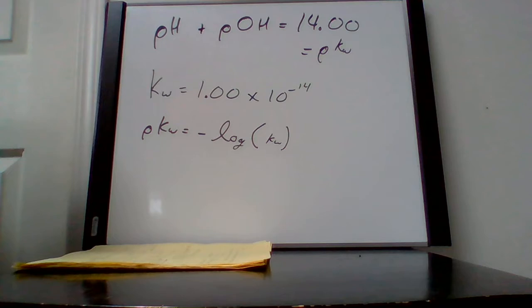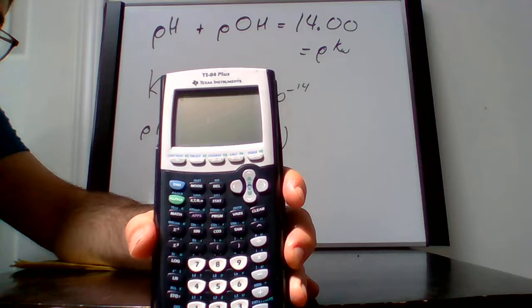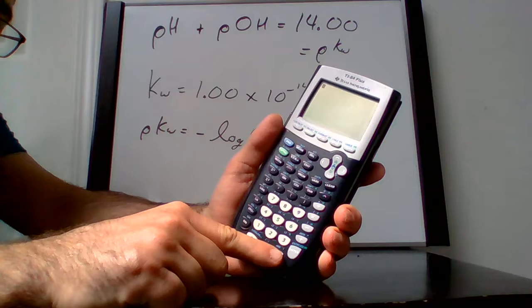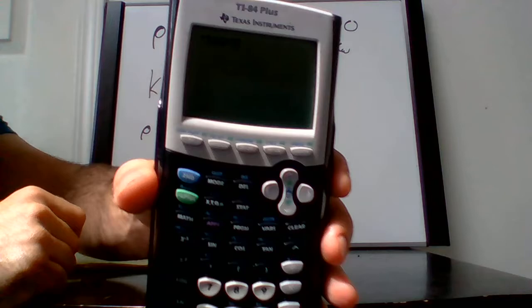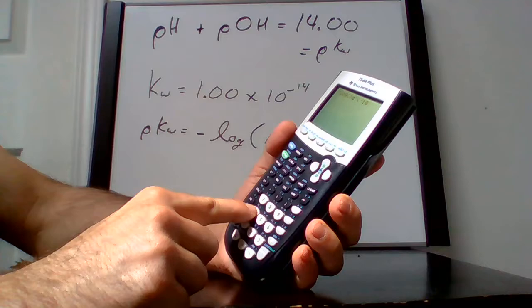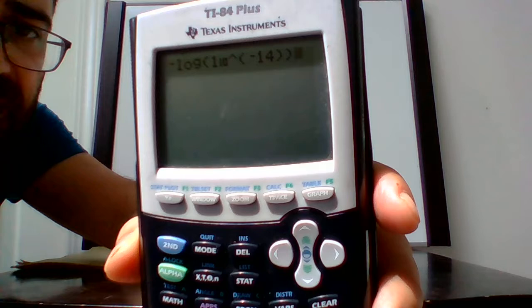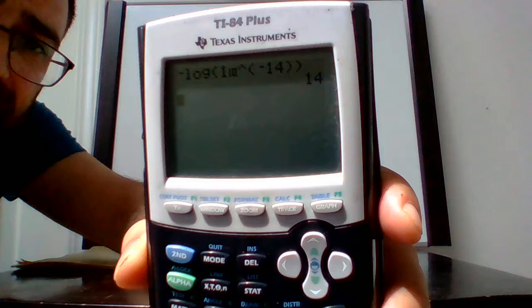I'll also do this with the pH and pOH of sodium hydroxide and hydrochloric acid. The calculator you use might require a slightly different entry order, but let's work through it. I'm doing the negative log, and on my calculator it automatically brings up the brackets. I'm going to enter in the value of 1 times 10 to the negative 14 and close all brackets.